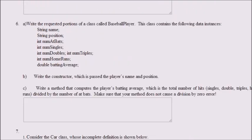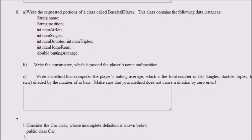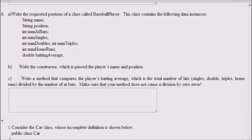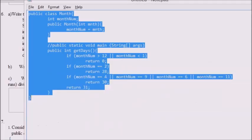We're going to write the requested portions of a class called baseball player. This problem has three parts. The fields that the class baseball player needs to have are string name, string position, int num at bats.